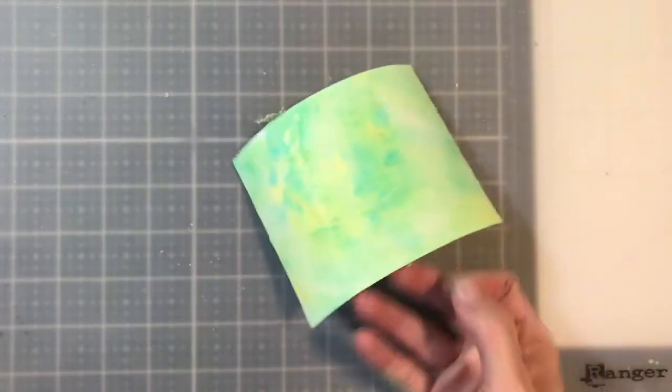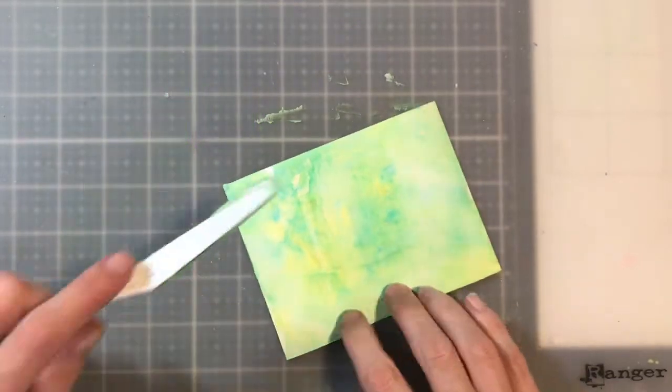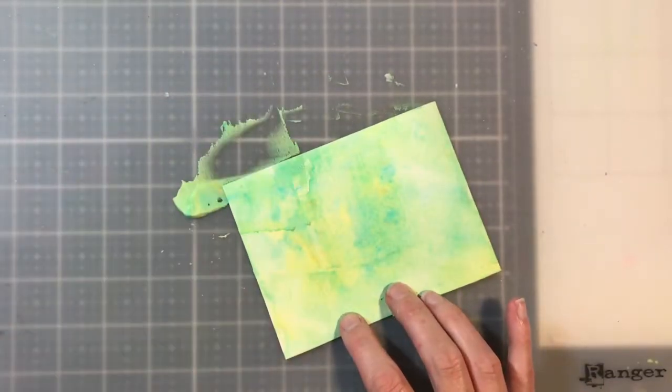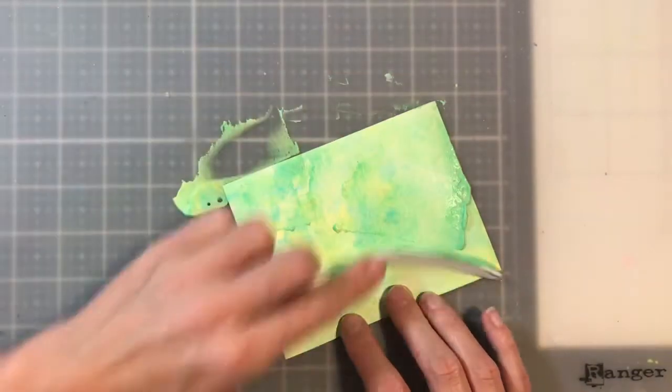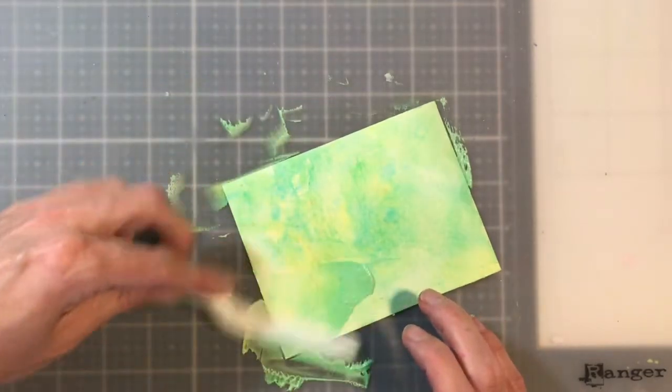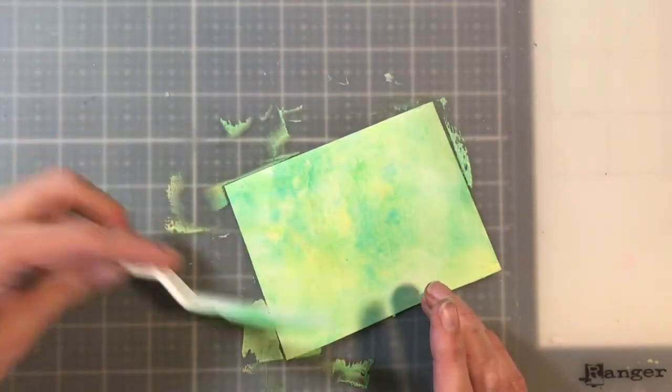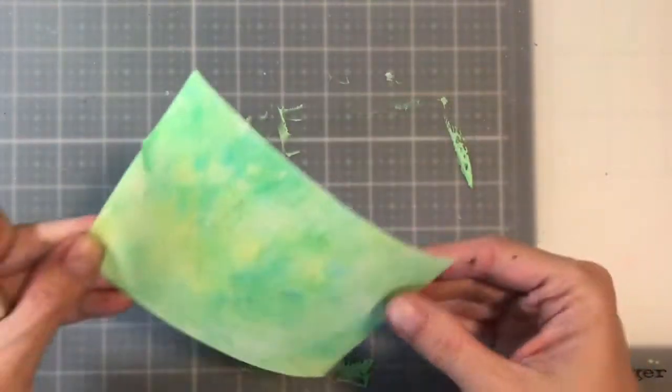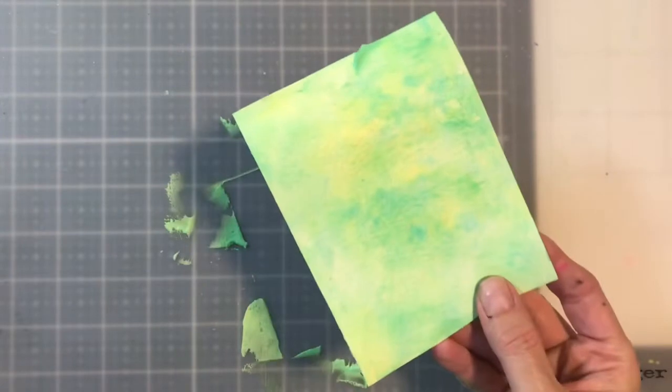And if you have a spot that you want more color on, you can just take that shaving cream and just pop it on it, and fill in those spots. And since I paid attention to my color family, it's all going to work just fine. So you can take that aside and let it dry, and then we're going to move on to the next technique. Make sure you hang out at the end of the video, and I'm going to show you the finished cards.